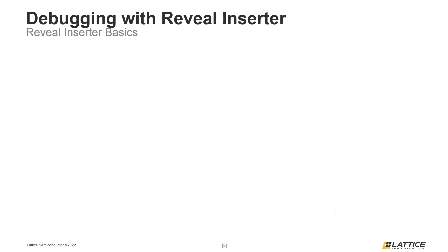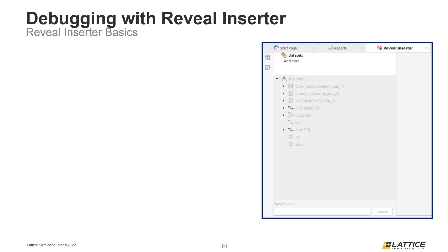Once it has opened, the left side of the Reveal Inserter window should look similar to the figure on the slide. This section of the Inserter window is used to add debug cores for a project.